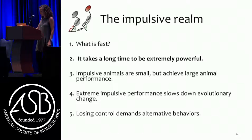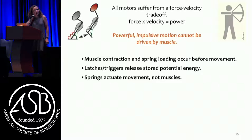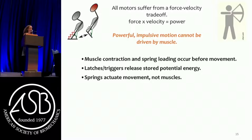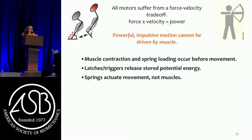Story two: it takes a long time to be extremely powerful. All motors suffer from a force-velocity tradeoff, beautifully illustrated in muscle. Force times velocity is power — you can get a lot of force and little velocity, or a lot of velocity and little force, but you can't have both. That means powerful impulsive motion cannot and is not driven by muscle directly — it's impossible. Muscle contraction and spring loading occur before the movement; latches and triggers release the potential energy, and then springs actuate the movement, not muscle.